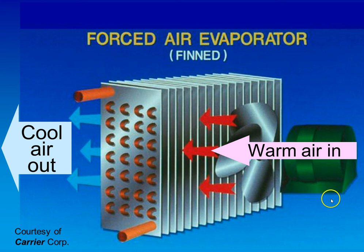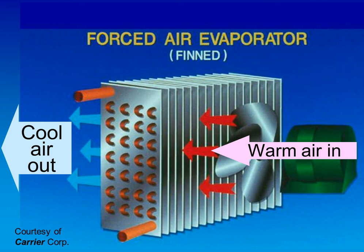One thing I want to make note of is that the freezer and cooler coils differ considerably in construction as far as the spacing between the fins goes. The cooler and freezer coils have larger gaps between the fins than a residential air conditioning system does. It's because these coils operate at temperatures below freezing, and they start to frost up — and if the fins are really close together, they'll ice up rather quickly.